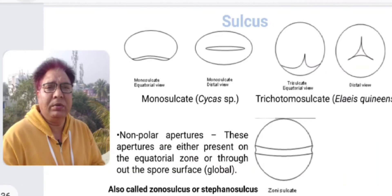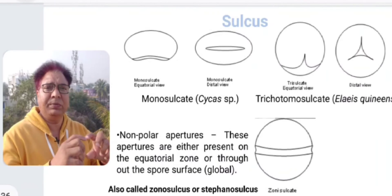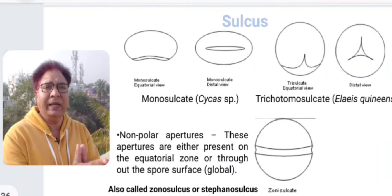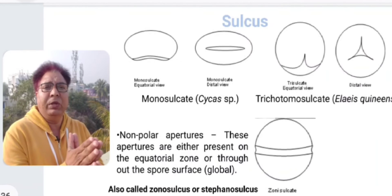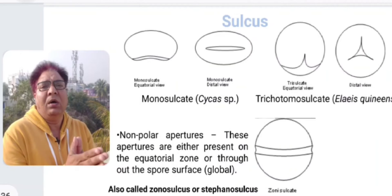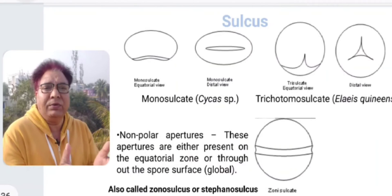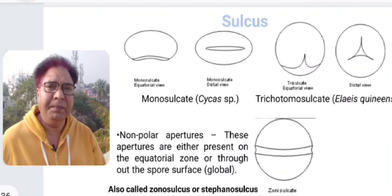Those were the polar apertures. Now we talk about non-polar apertures. Sulcus could also be non-polar, distributed in the equatorial region. In that case, the nomenclature would be zonosulcate or stephanosulcate, and this is seen in Nymphaea.